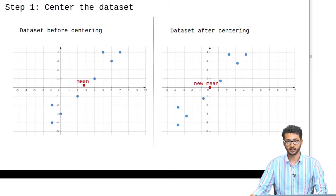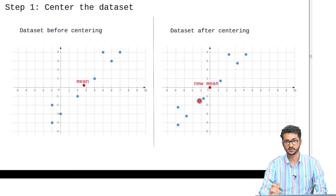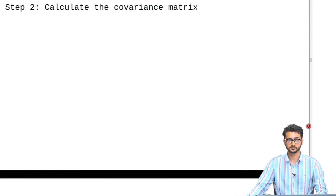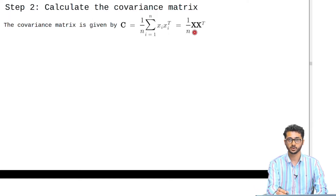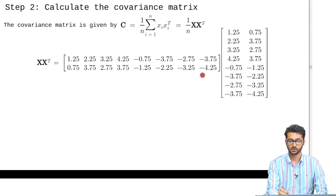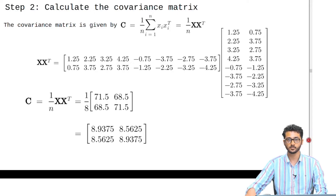We know that when we find our principal component, it should be the direction which explains the maximum variance, which we expect to be along this direction. Let us see if the operations we perform confirm the same. To calculate the covariance matrix, x is of shape 2×8 and x_transpose is of shape 8×2, so when we multiply the two we get a matrix of shape 2×2. Now that we have our covariance matrix, we can calculate the eigenvalues and eigenvectors corresponding to it.